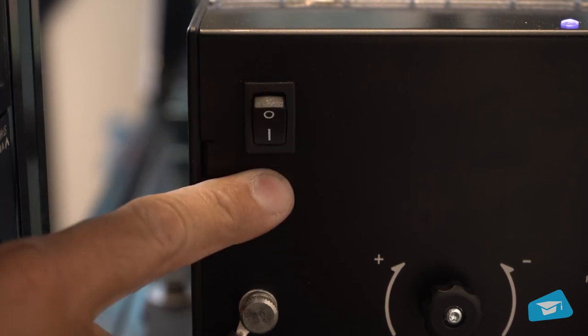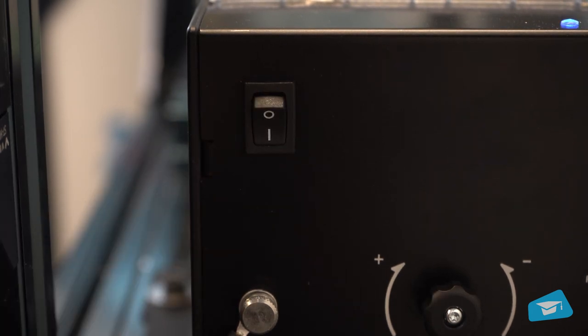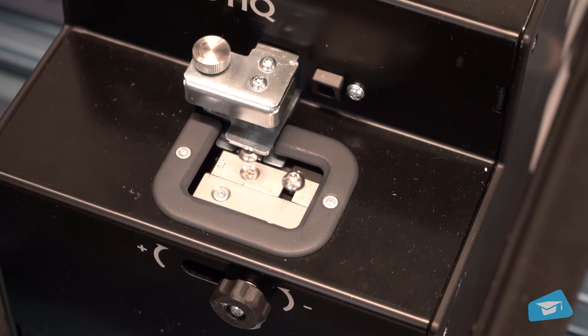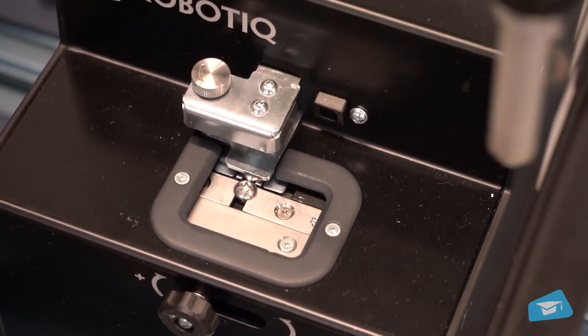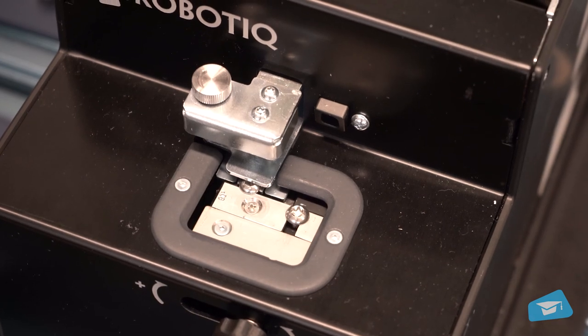Now, simply turn on the Roboteek screw feeder and watch the screws align one after the other. If you notice blockages or issues in the process, perform additional adjustments to make sure it runs smoothly.